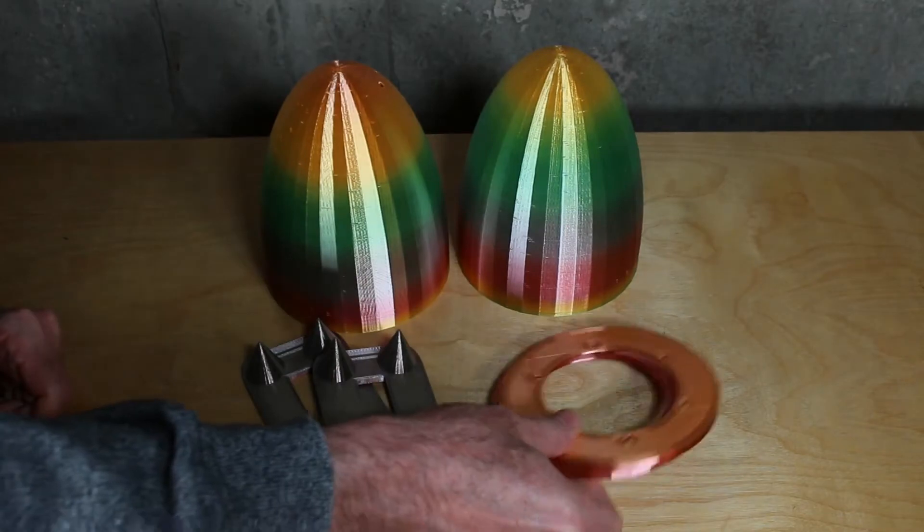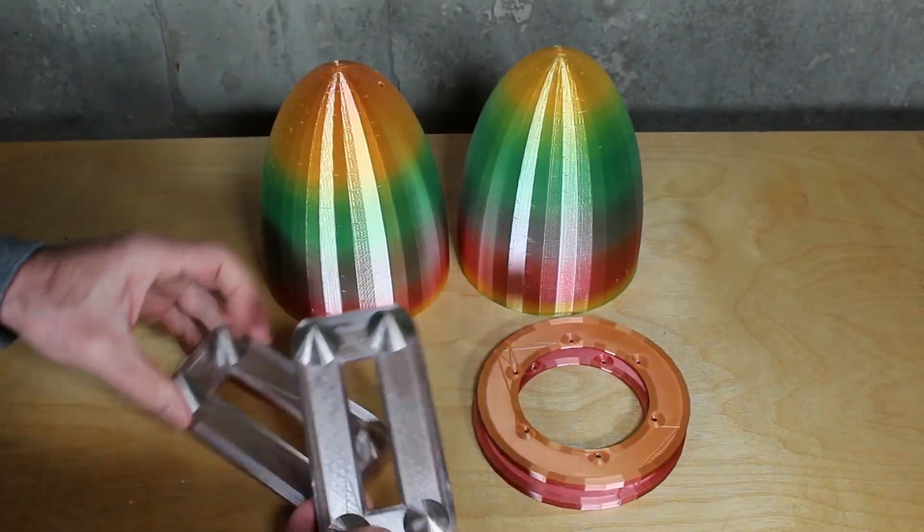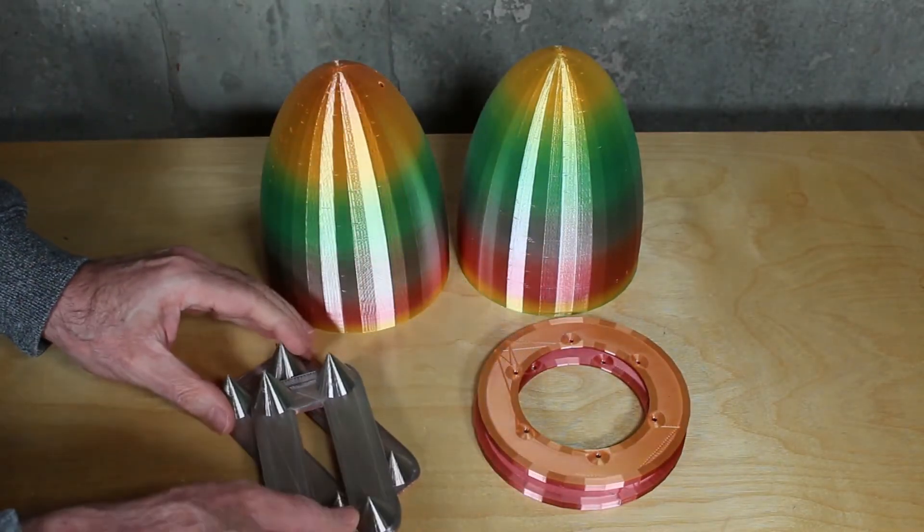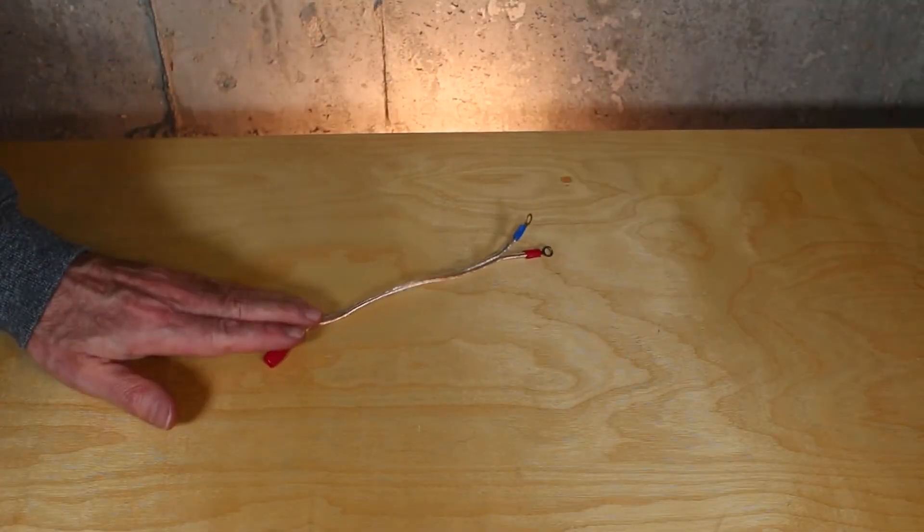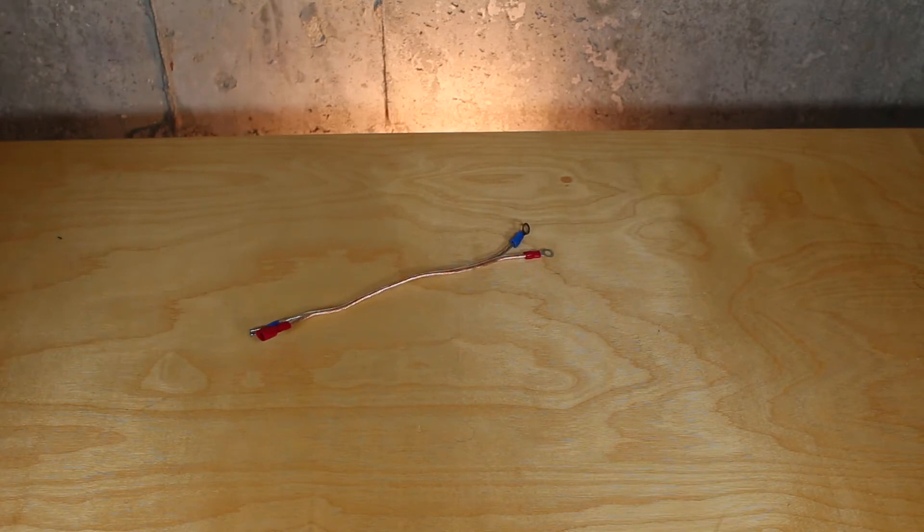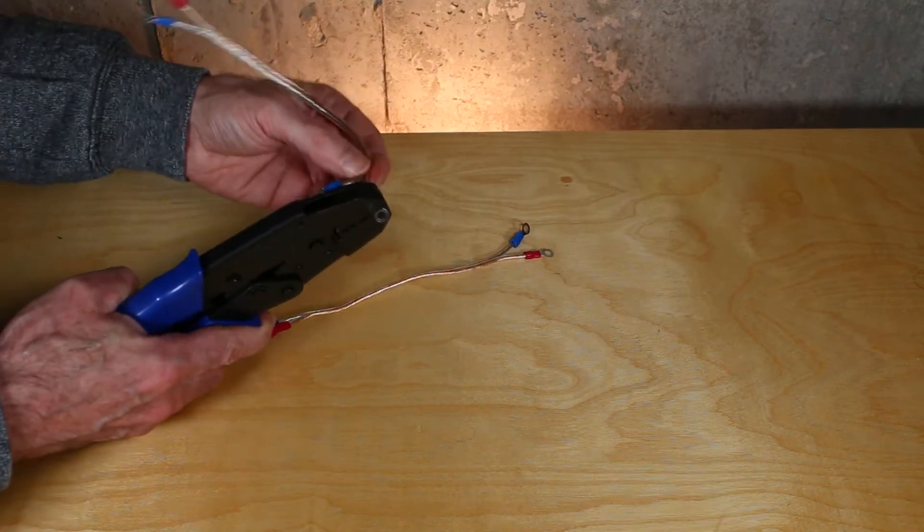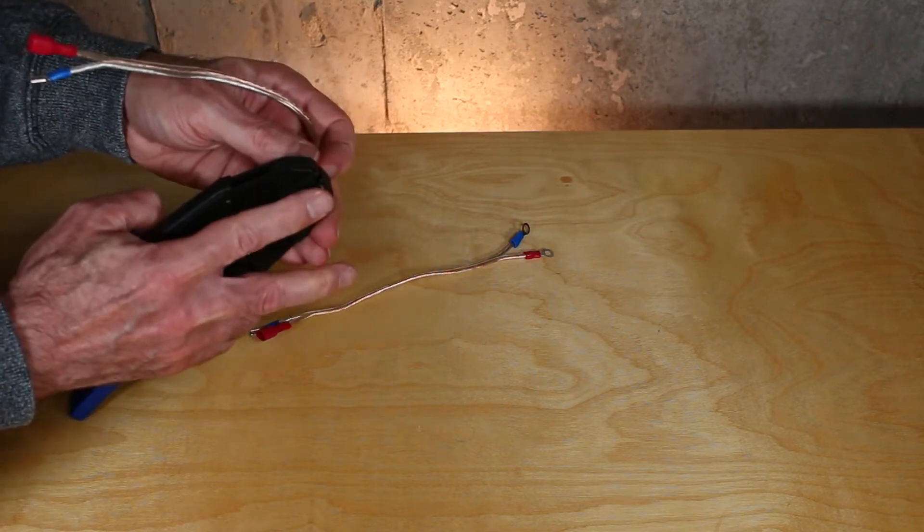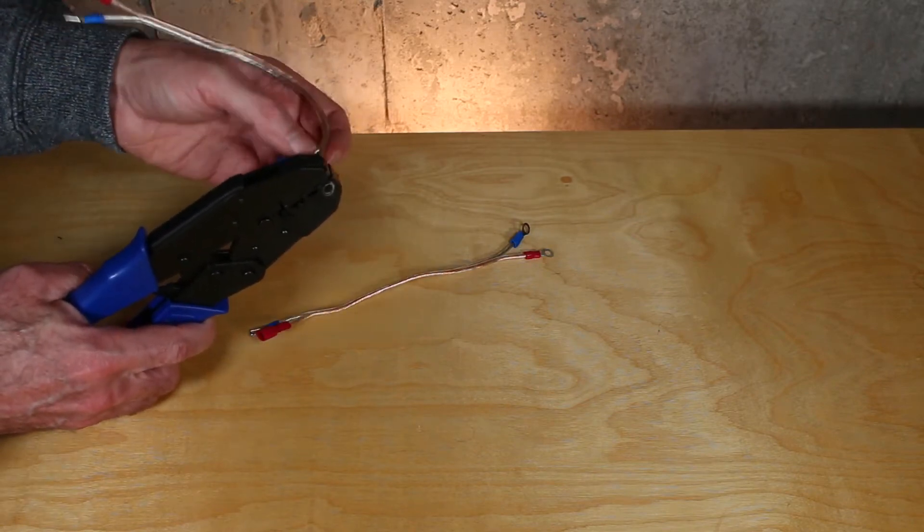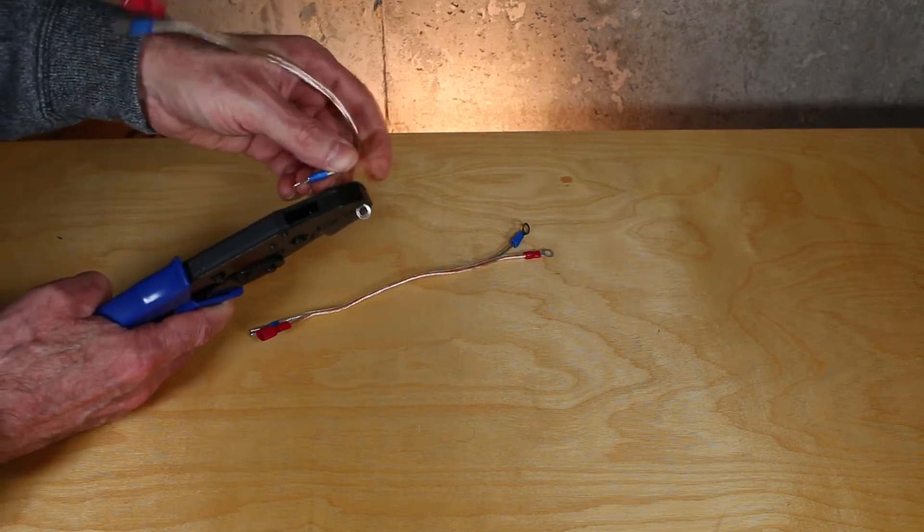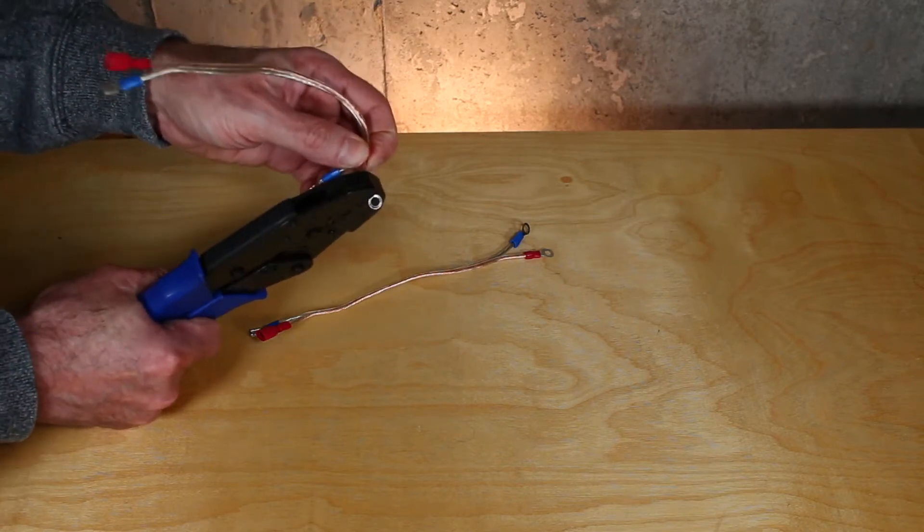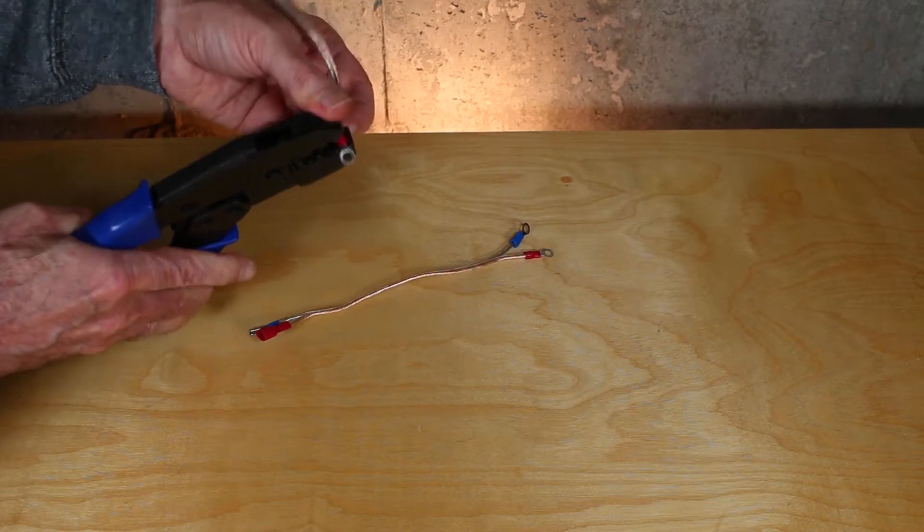So here's one of the completed wires that will connect the speaker to the binding posts. And just to show you how this works really quick: you simply strip the cable, you insert either the eye or the spade connector, you simply put the wire here inside and you squeeze and it crimps, and then you are done.